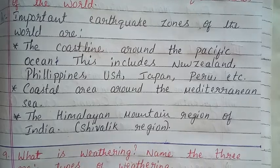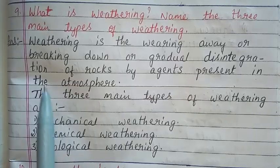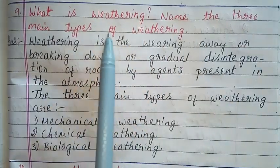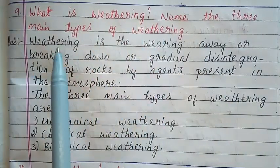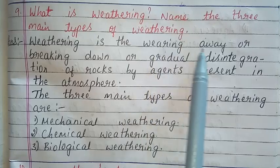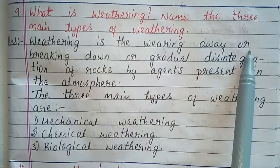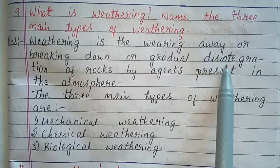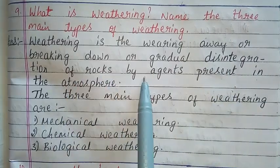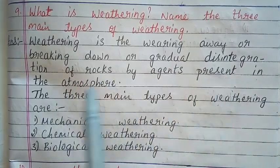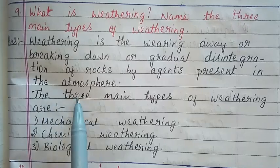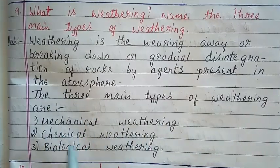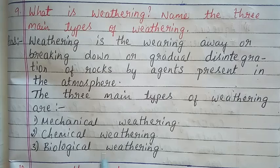Question 9: What is weathering? Name the three main types of weathering. Answer: Weathering is the wearing away, breaking down, or gradual disintegration of rocks by agents present in the atmosphere. The three main types of weathering are: Mechanical weathering, Chemical weathering, and Biological weathering.